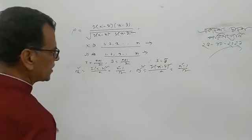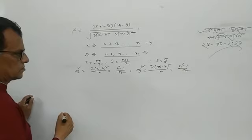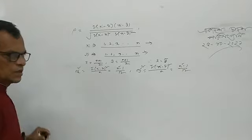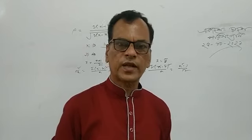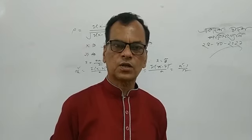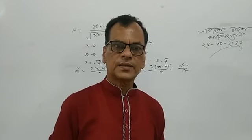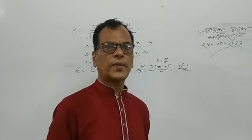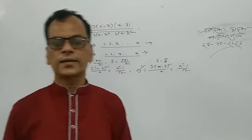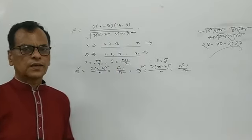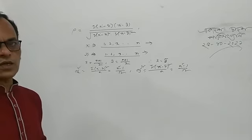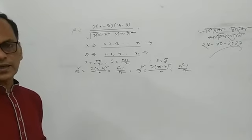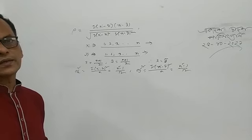Covariance XY: covariance XY equals summation (xi minus x-bar) into (yi minus y-bar), divided by n.